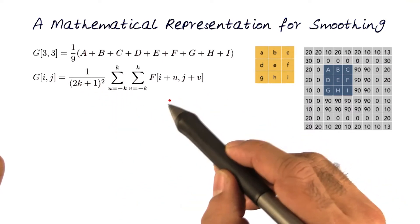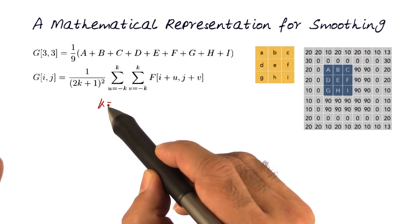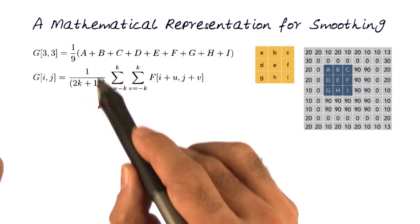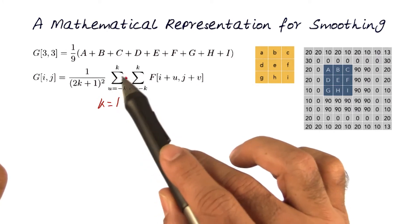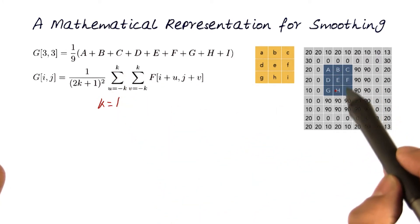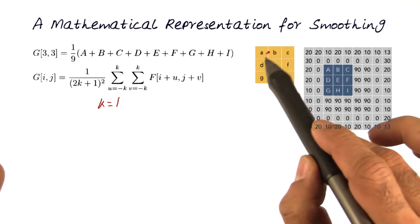For example, in the instance where k equals 1, this would be 3, 1 over 3, that generalizes to that. And what we're doing is summing over the whole two dimensional region here.